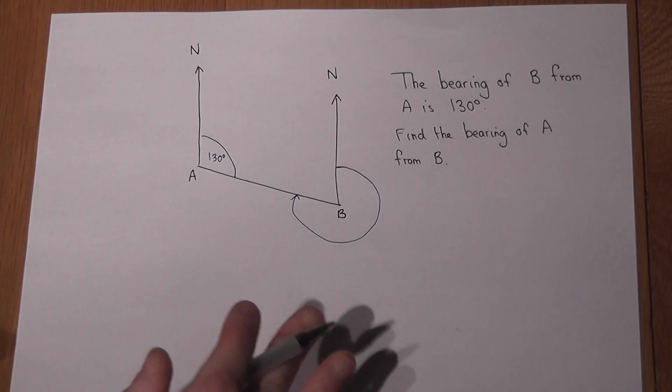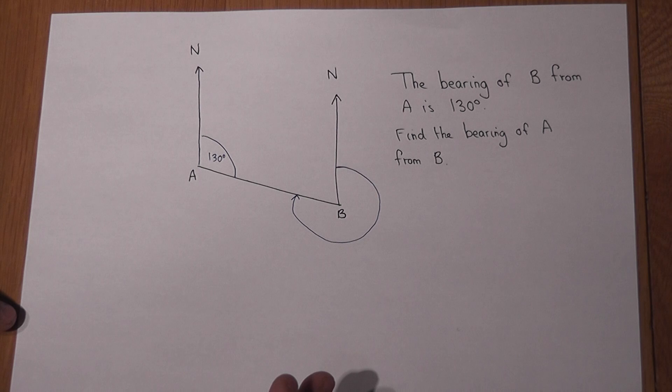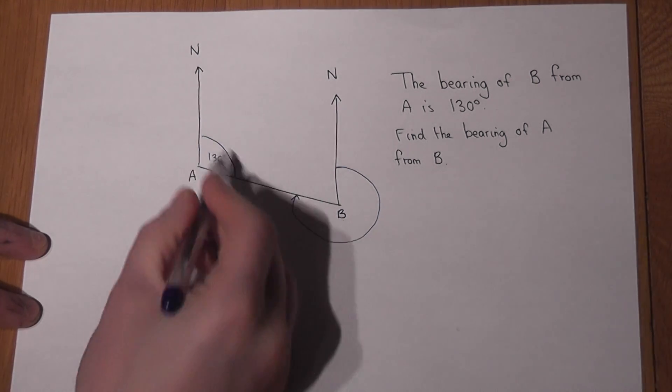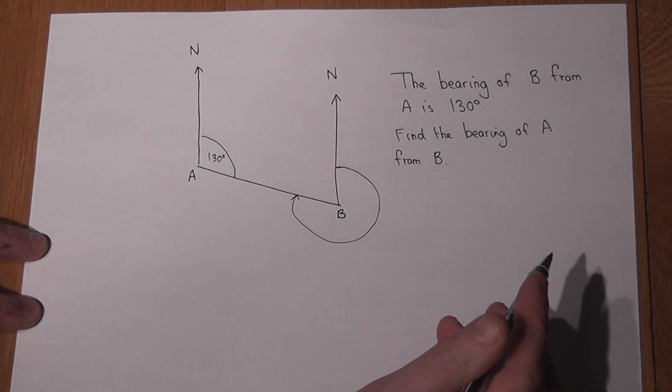Now we can't measure this it's not to scale however we know a really important angle fact which is that the two angles inside two parallel lines are what are called co-interior.